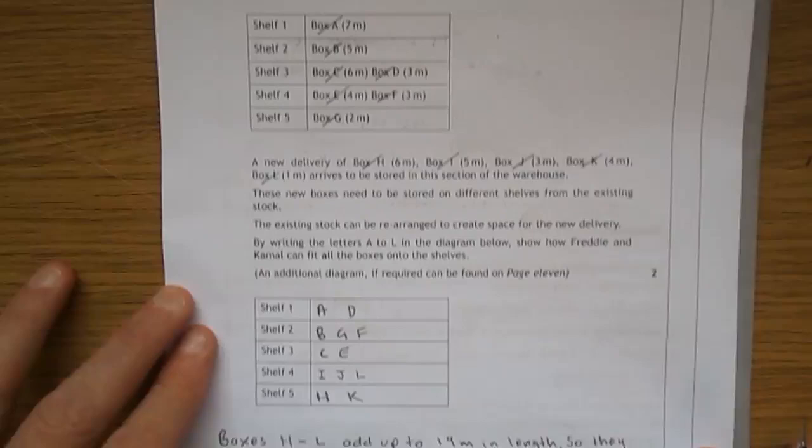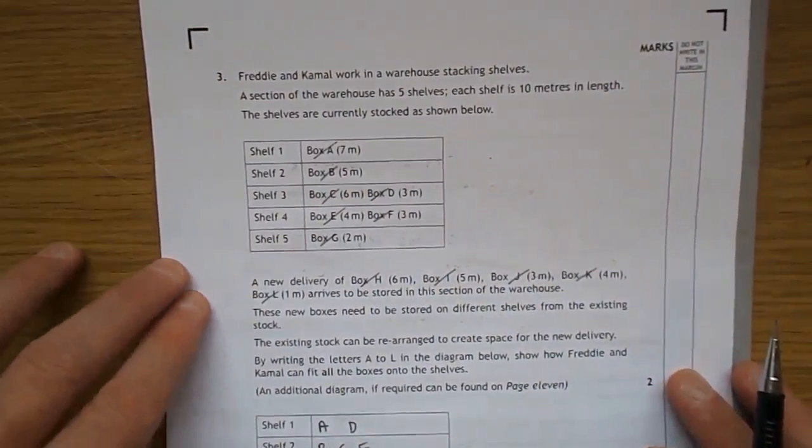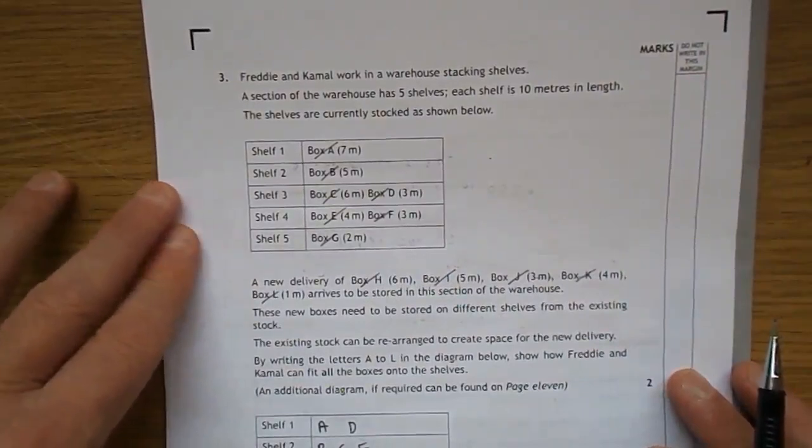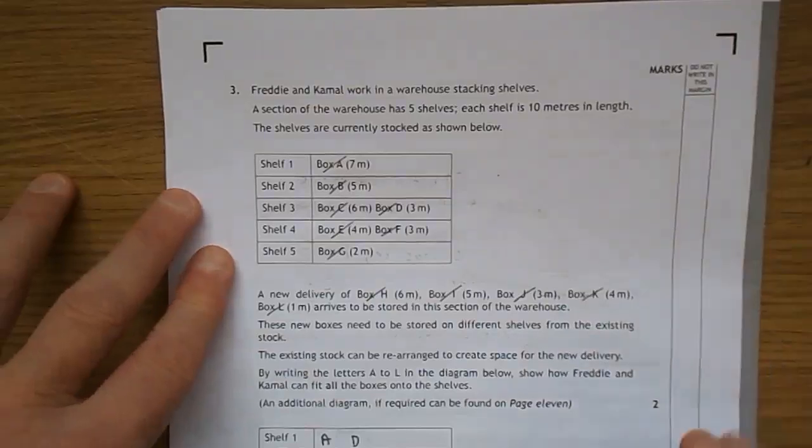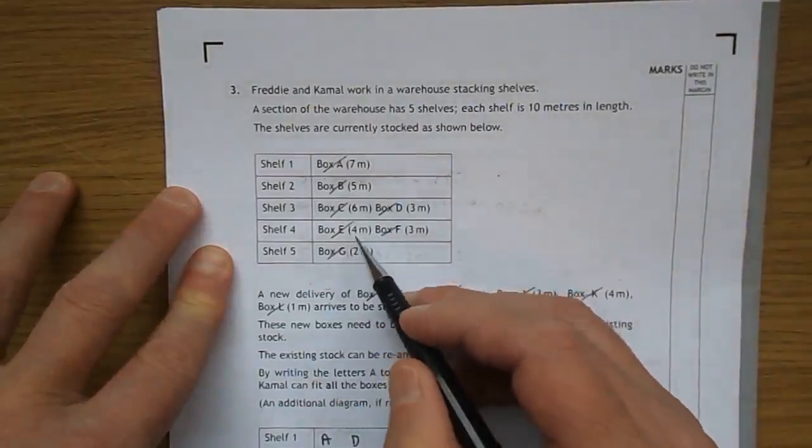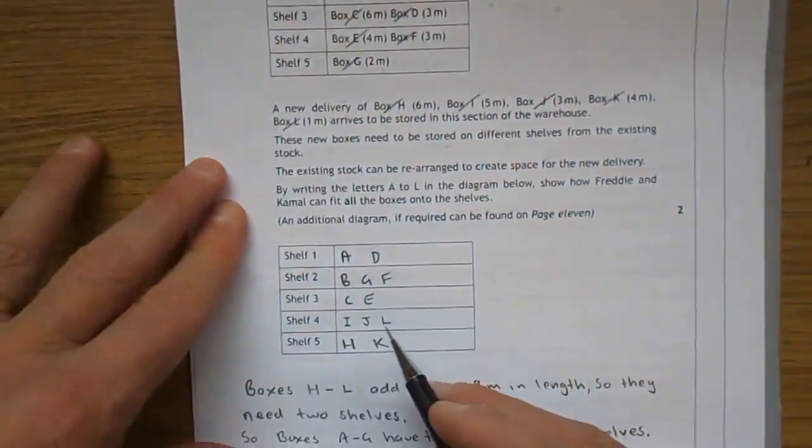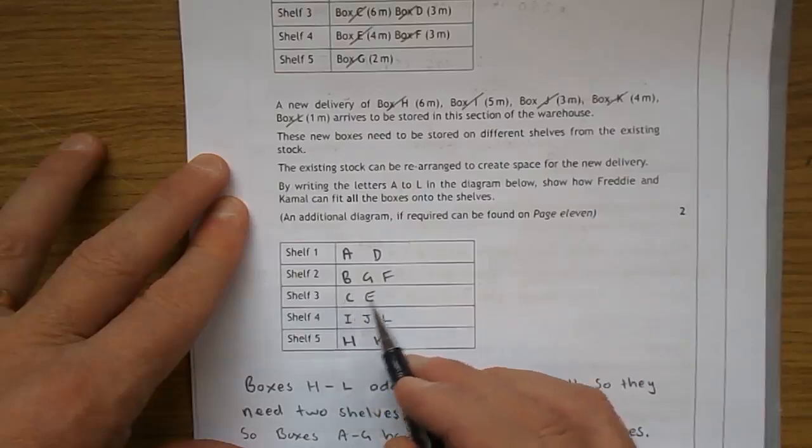Now we have the problem of the other ones to be stacked in the top 3 shelves. Again, try and get as close as you can to 10, if not 10, without going over. Okay, let's see, quick check, C and E add up to 10, so there we go, C and E are going to go on that shelf there.